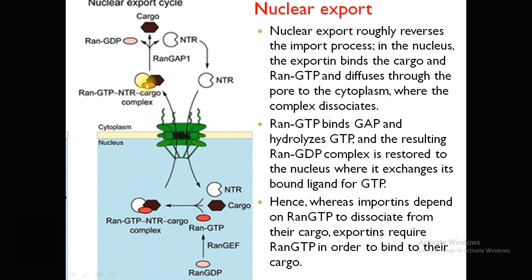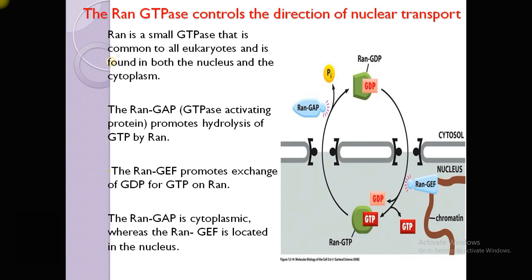RanGTP then binds to GAP protein; RanGAP hydrolyzes GTP, and the RanGDP complex is restored to the nucleus again, where it exchanges GDP for GTP. Importins depend on RanGTP to dissociate from their cargo, while exportins require RanGTP in order to bind to their cargo proteins. RanGTPase controls the direction of nuclear transport.